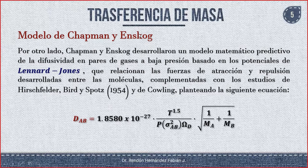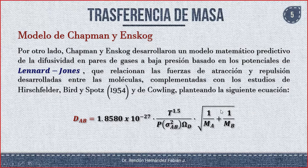El modelo de Chapman-Enskog dice que la difusión de A hasta B es igual a 1.8580×10⁻²⁷ multiplicado por la temperatura a la 1.5, entre la presión multiplicado por σ_AB al cuadrado por Ω_D, multiplicado por la raíz de (1/M_A + 1/M_B).